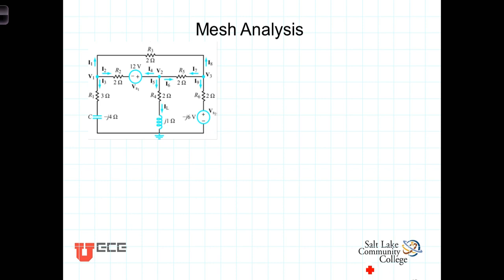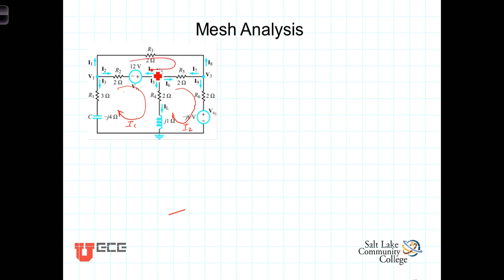Now let's analyze the same circuit using mesh analysis techniques, just to demonstrate mesh analysis in the phasor domain and show that we get the same answers either way. In mesh analysis we identify the meshes — any loop that doesn't contain other loops. We've got a loop here and we'll define the mesh current I1, another mesh current I2, and the top mesh current I3. We now write KVL equations for each of those three meshes.